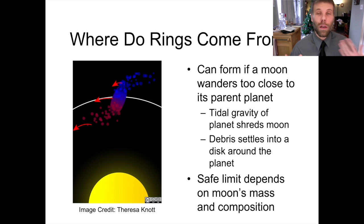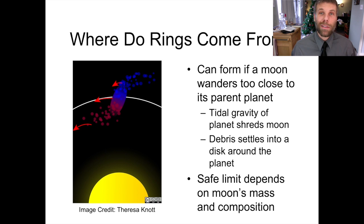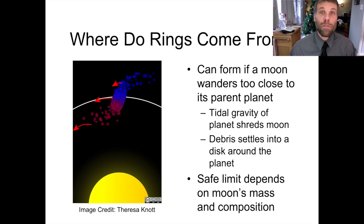So where do all of these billions of ring particles come from? We think that they're created when a moon wanders too close to the parent planet and gets shredded by the tidal forces of the parent planet's gravity. The boundary where this happens has a name — it's called the Roche limit. Where it is depends on the mass and composition of a moon, so some moons can get closer than others depending on how strong gravity is in holding the moon together. If the moon gets too close, the forces pulling the moon apart due to tides are greater than the force of gravity holding the moon together, and the moon will begin to disintegrate. And that's what you see depicted on the left-hand side of the slide.